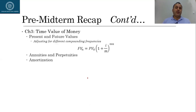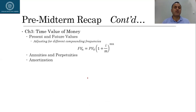In chapter number three we talked about time value of money, and in my opinion this is actually the most important chapter of this book. The reason it is important is because we use these tools later for valuation of different securities and for capital budgeting techniques. If you are not comfortable with those concepts, please go back and read chapter number three again because it is extremely important.